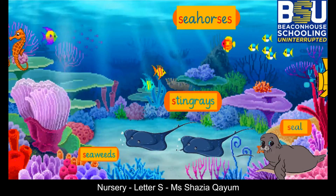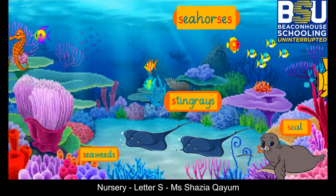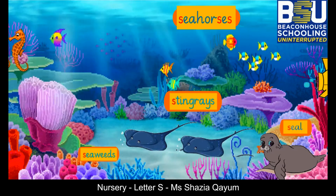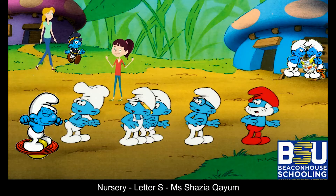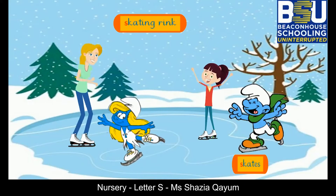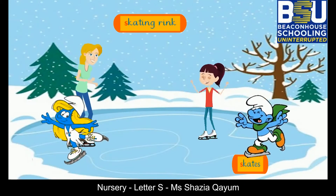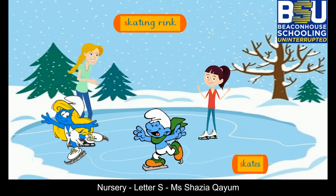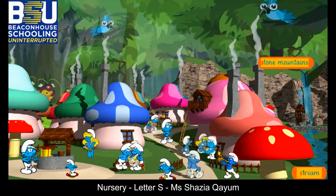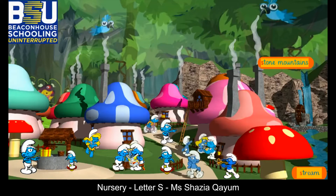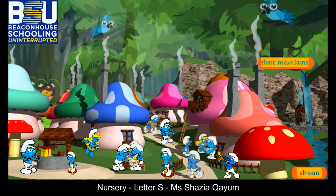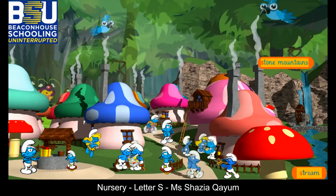Moreover, we were surprised to see such bright seaweeds. On our return we came across an ice skating rink where Lily Smurfette and Hefty Smurf helped us in skating. The village had a magical scenic beauty with stone hills covered with snow, natural springs and streams flowing down the fields. It was a superb experience.